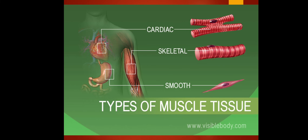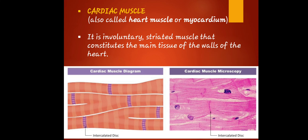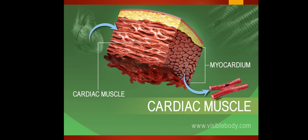Now let's proceed to the types of muscle tissue: cardiac, skeletal, and smooth. Cardiac muscle, also called heart muscle or myocardium, is an involuntary striated muscle that constitutes the main tissue of the walls of the heart. Cardiac muscles perform coordinated contractions that allow your heart to pump blood through your circulatory system.